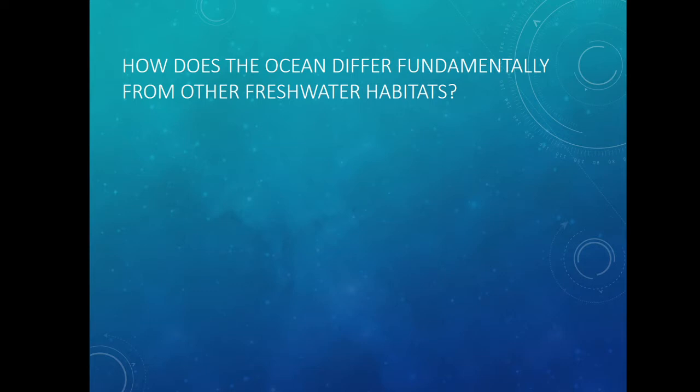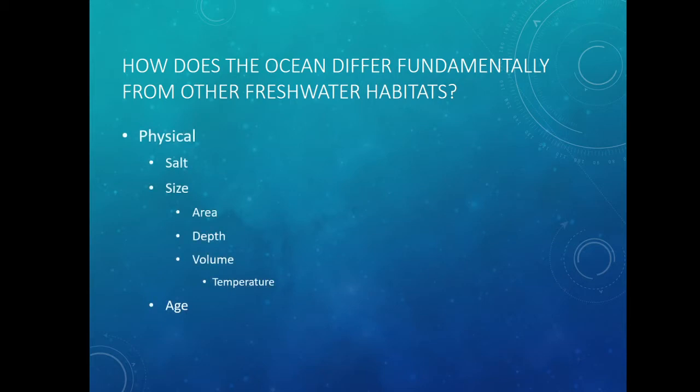Pause the video and think about that, but here are the answers. First, when thinking about a physical system, the ocean is salty. It's big and it's old. Then organisms disperse differently, and there's a huge disparity in diversity, which we'll talk about towards the end of this lecture.